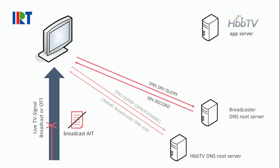This second DNS server is broadcaster-specific, and a second request from the HbbTV receiver to this server gives back the domain where the AIT file can be found.